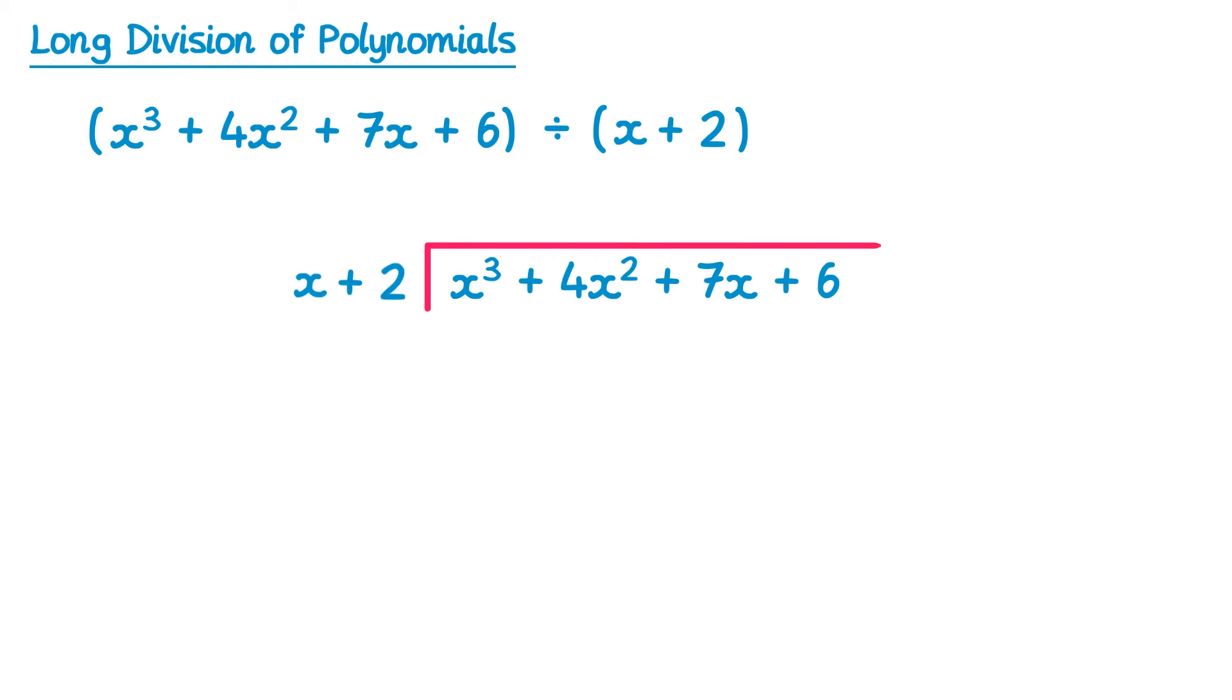What we do now is consider what we would get if we did x cubed divide by the first part of this linear term, the x. x cubed divided by x is x squared, so that's what we write at the top. Then because we're following the format for long division, we take this x squared and we multiply it back by this whole linear term. So x squared times x is x cubed, and x squared times plus 2 is plus 2x squared. And then we do a subtraction.